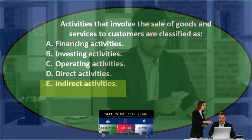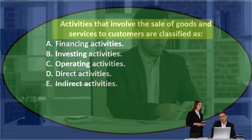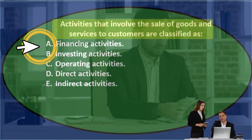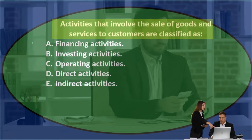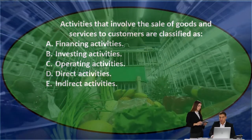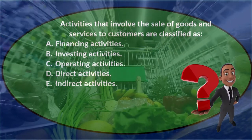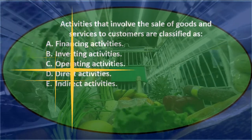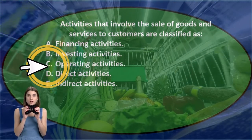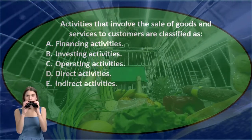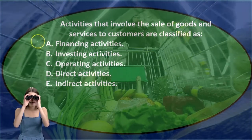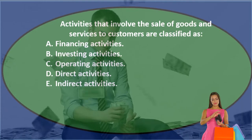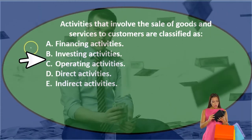Let's go through this using the process of elimination. Activities that involve the sale of goods and services to customers — I would approach this by first asking: is it in the operating activities? That's where most things will be. The operating activity deals with things related to the income statement; it's like the income statement on a cash basis. Here, we're talking about the sale of goods, so the normal journal entry would involve revenue.